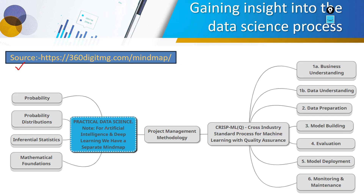Data science has different sub-branches like machine learning, deep learning, artificial intelligence, and NLP. Some steps are different for deep learning, some for text processing, some for AI data. Here we are going to talk about CRISP-MLQ — Cross Industry Standard Process for Machine Learning with Quality Assurance. This is the project management methodology for data science, and it includes a total of six steps.